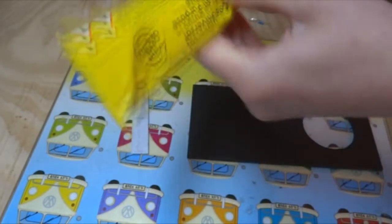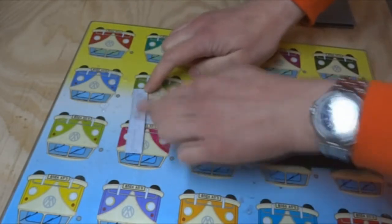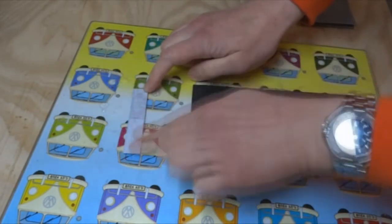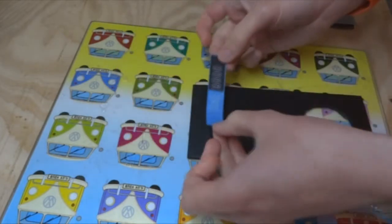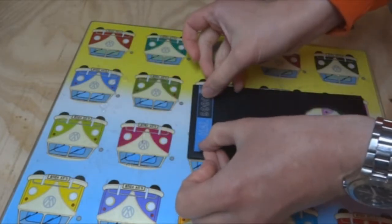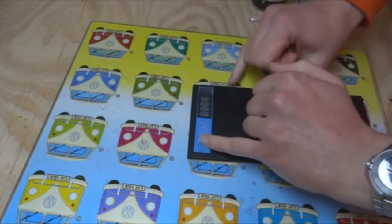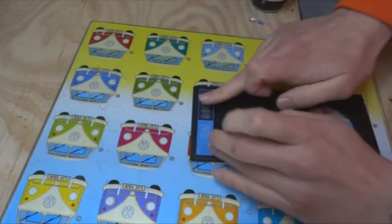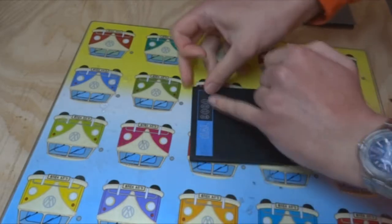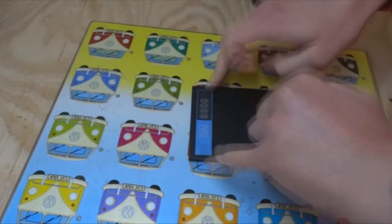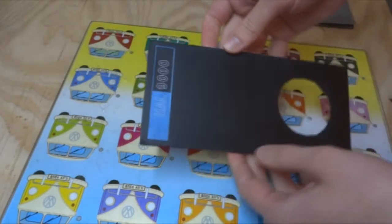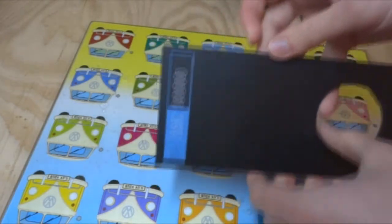The piece of MDF that you're seeing there, I sealed it with PVA, and then gave it a single coat of black satin spray paint, then waited for that to fully dry overnight, then sanded it in one direction only - only in the horizontal direction - to give, you can just about see the lines on it,